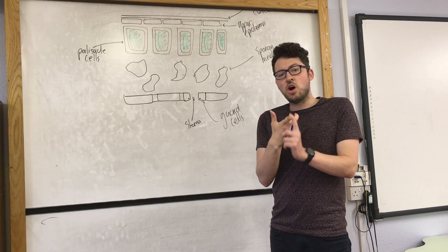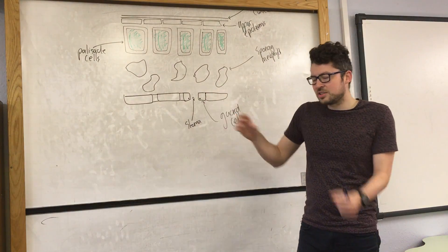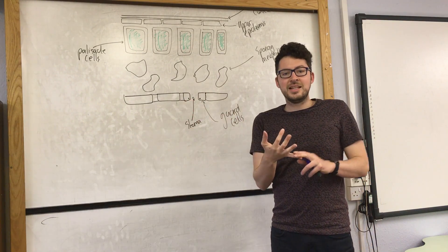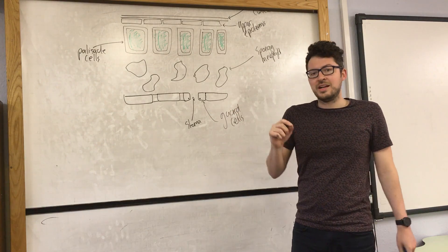Carbon dioxide in and oxygen out. The guard cells can either expand or shrink, and that would allow more gases in or out, and also allow water out.